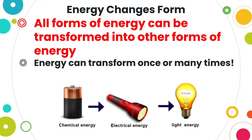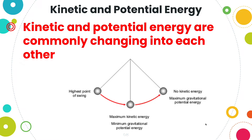Energy changes form. All forms of energy can be transformed into other forms of energy. Energy can transform once or it can transform many times. For example, a flashlight has a battery inside it. Through chemical energy, that chemical energy is released and creates electrical energy, and that electrical energy through the light bulb is turned into light energy. So here we have energy transforming into multiple other types of energy. Kinetic energy is the energy of motion; potential energy is stored energy not yet used.